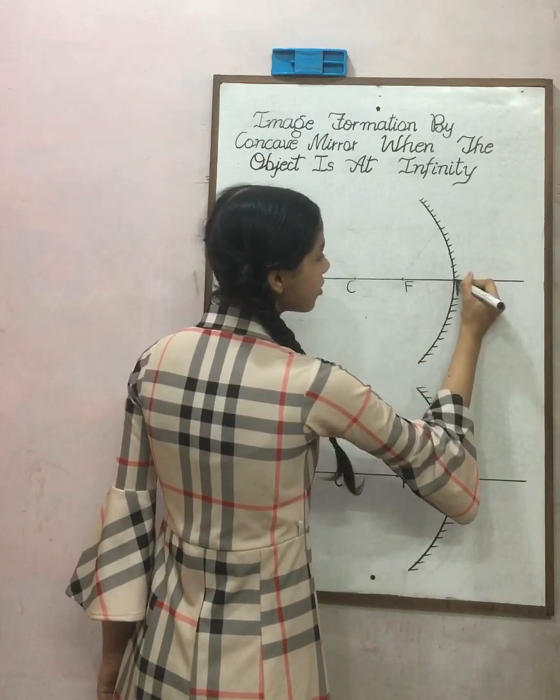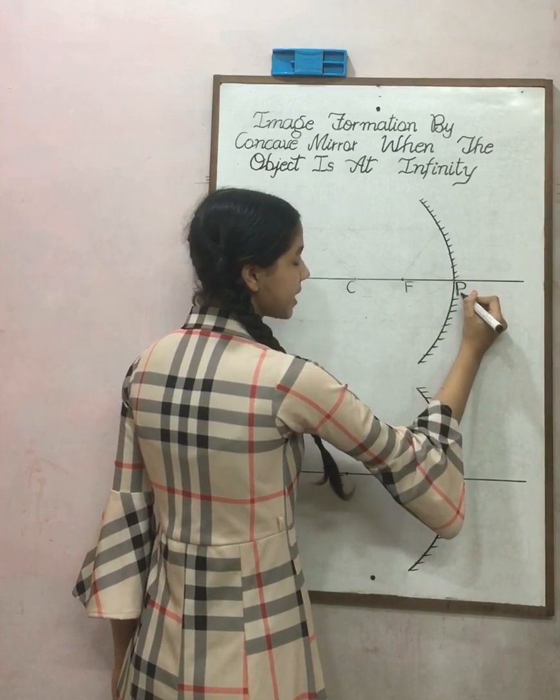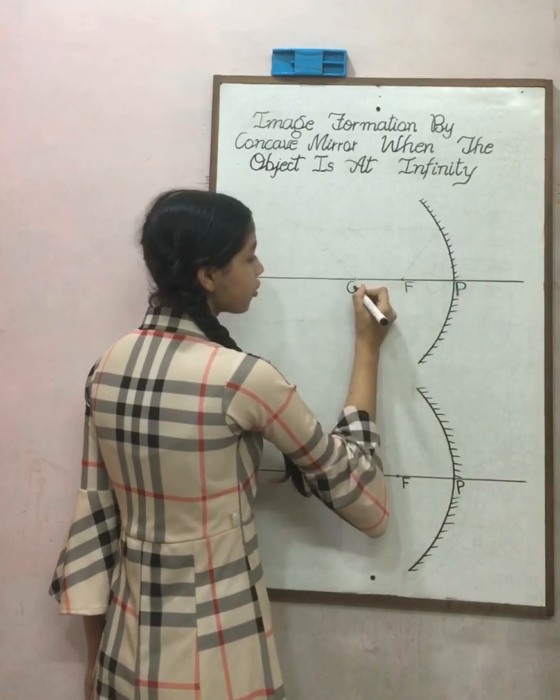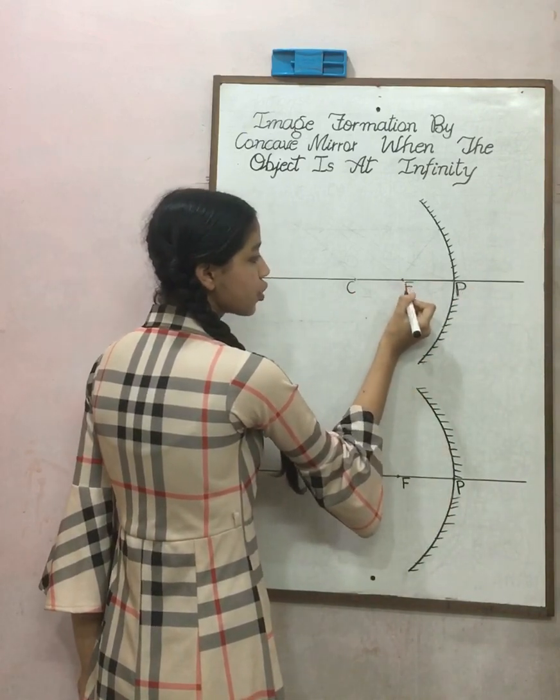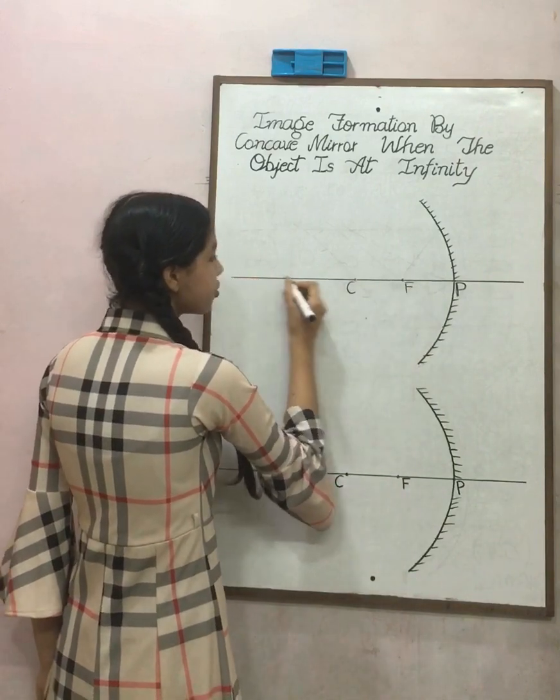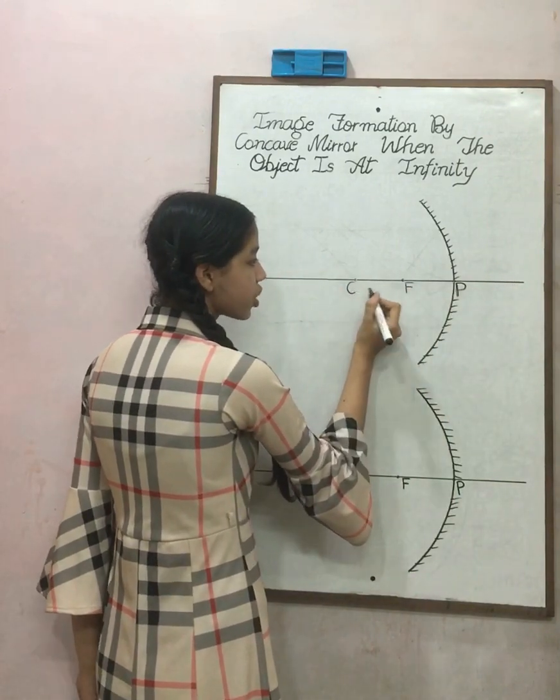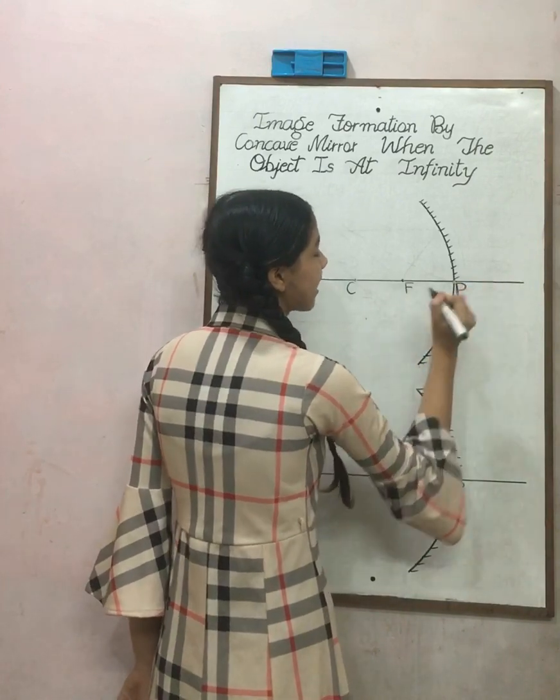The center of the mirror is known as pole, it is denoted by capital letter P. In between center of curvature and pole, there is focus, it is denoted by the capital letter F. An imaginary line going through center of curvature, focus and pole is known as principal axis.